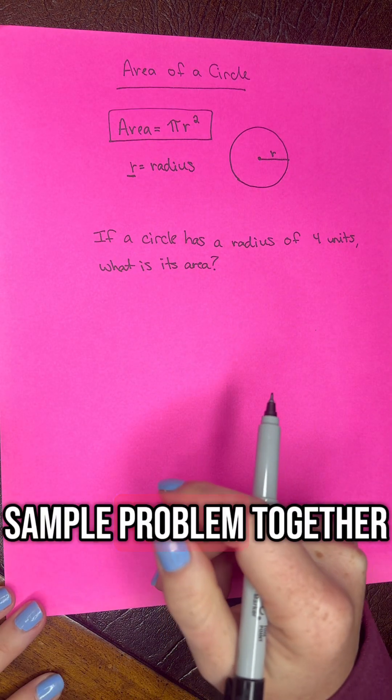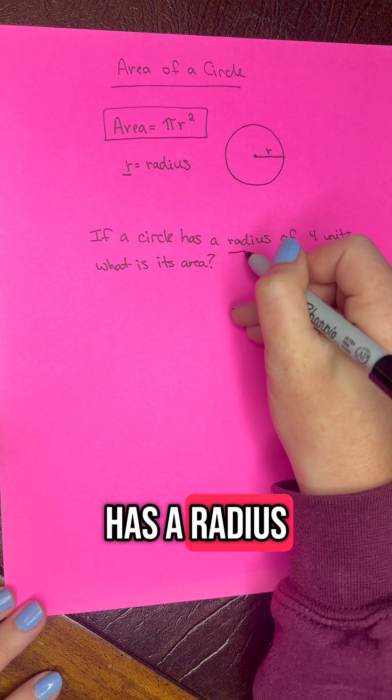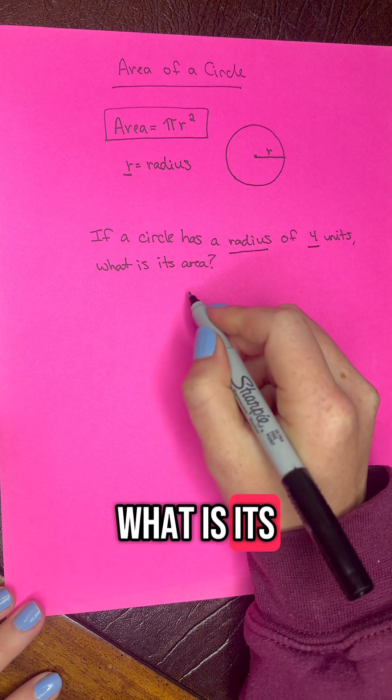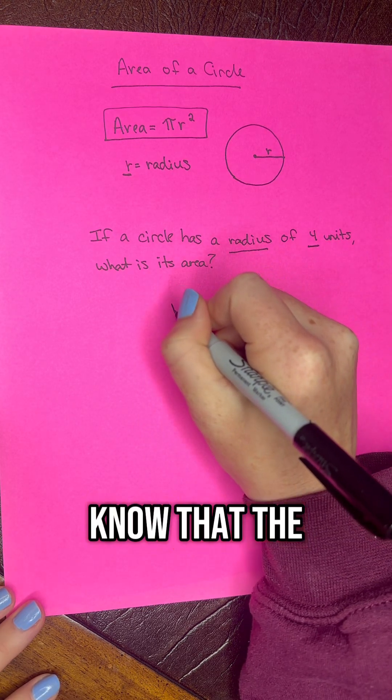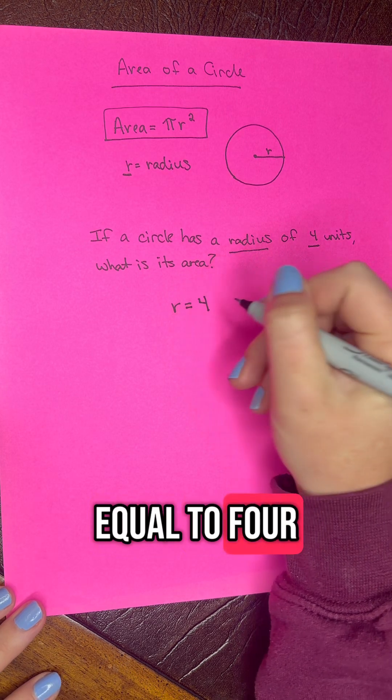Let's do a sample problem together. If a circle has a radius of 4 units, what is its area? We know that the r variable, the radius, is going to be equal to 4.